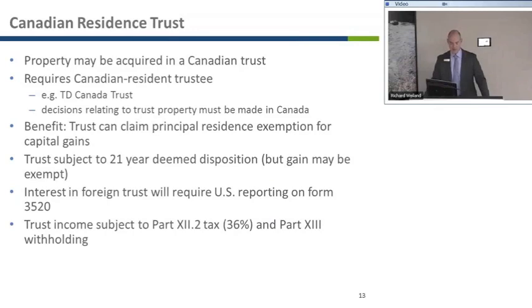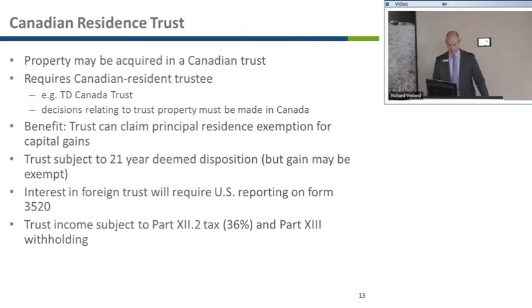A Canadian resident trust will be subject to the 21-year deemed disposition rule, but if the residence qualifies for the principal residence exemption, there won't be any tax to pay on the gain — it will simply lift the cost base of the property. The downside is that there are additional U.S. reporting requirements, and this structure is not ideal if there will be income earned from the property because the trust will be subject to penalizing rates of tax due to having a U.S. beneficiary. So this really works best for personally used property.